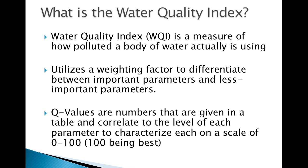What is the Water Quality Index, or WQI? It is a method used by researchers to determine how polluted a water body is, using 9 to 12 environmental parameters and a weighting factor that differentiates between the more important and less important parameters. The numbers are then summed and the body of water is given a grade of 0 to 100, with 100 being the best.